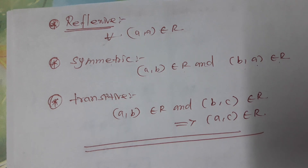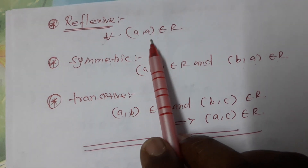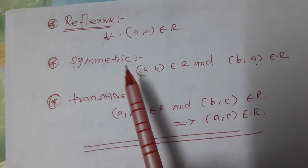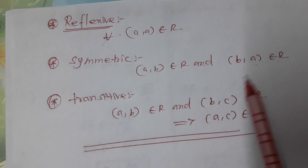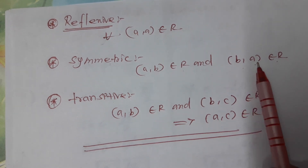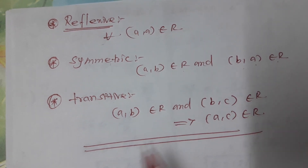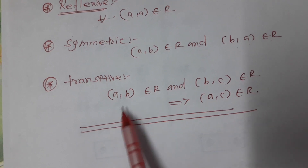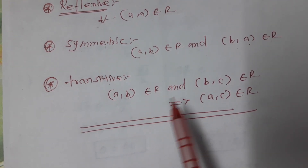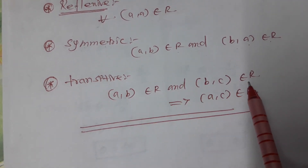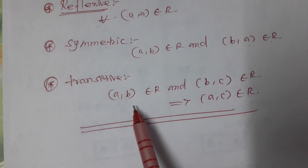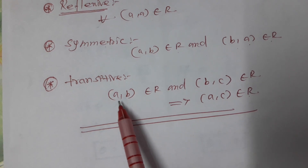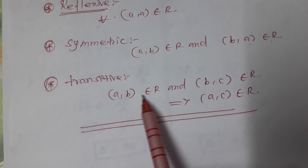Let me recall the definitions. Reflexive means (a,a) belongs to R. Symmetric means if (a,b) belongs to R then (b,a) belongs to R. Transitive means if (a,b) belongs to R and (b,c) belongs to R, then (a,c) belongs to R.